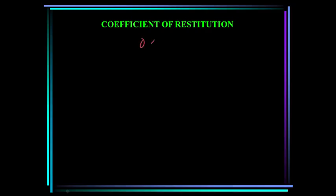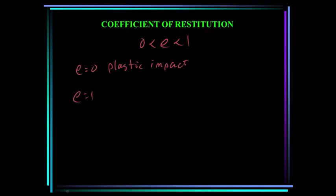In general, E is between 0 and 1. When E equals 0, we call that plastic impact — the relative separation velocity is 0, the particles stick together and move with a common velocity after impact. When E equals 1, we call that elastic impact. In a perfectly elastic collision, no energy is lost, and the relative separation velocity equals the relative approach velocity. In practical situations, this condition cannot be achieved.